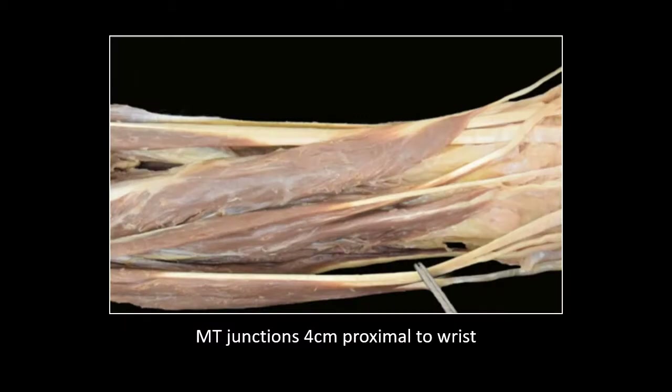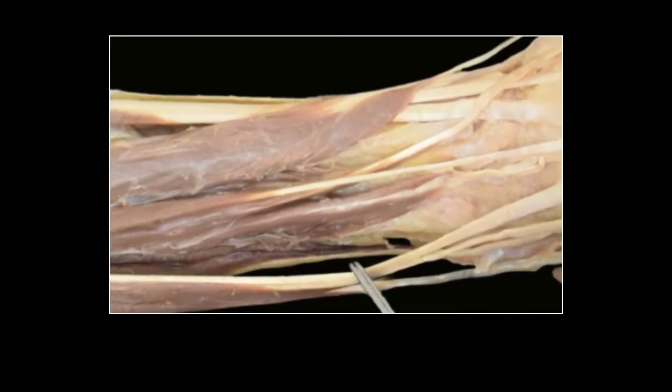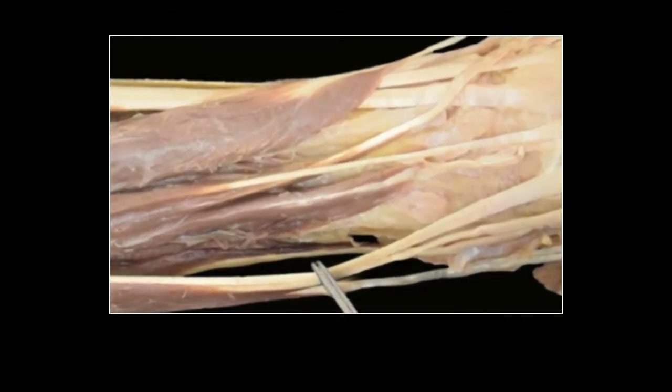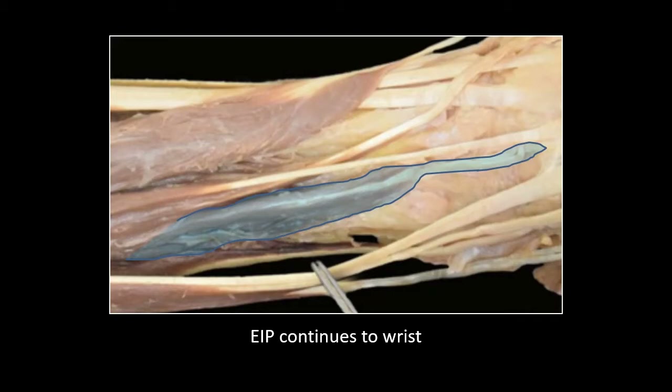The muscle-tendinous junctions of the extensor tendons are about four centimeters proximal to the wrist. However, this extends towards the wrist, and this will help you identify the tendon in a trauma situation or when you're performing an EIP tendon transfer.